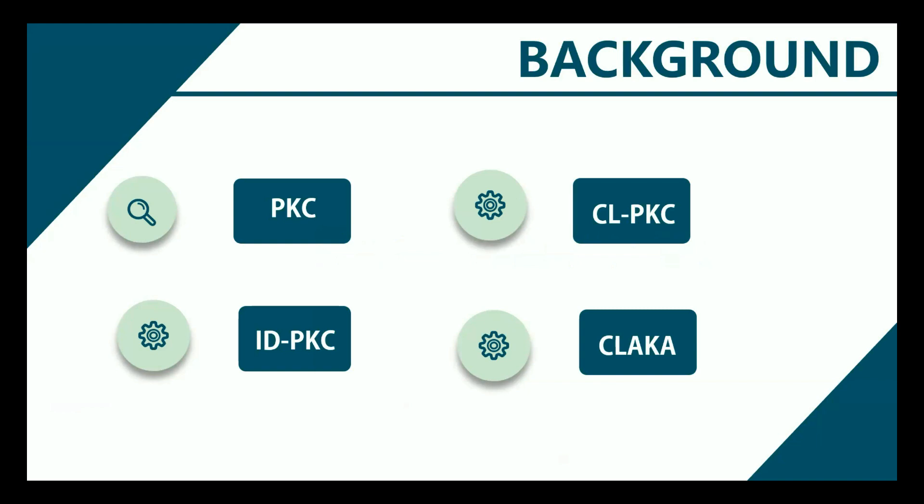To address these issues, Shamir introduced the concept of identity-based encryption, IDPKC. A user's public key can be derived from their identity — for example, their name or email address — while their private key is generated by a key generation center, the KGC.